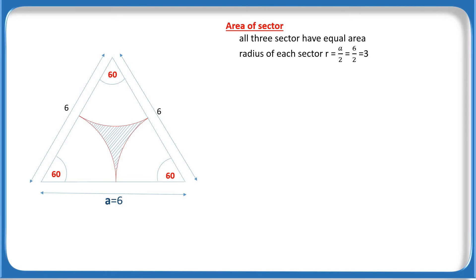And a equals 6, now r equals 3 centimeters and theta equals 60 degrees. Area of the sector equals pi r squared theta over 360. Put the value of r equals 3 and theta equals 60 degrees.